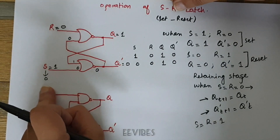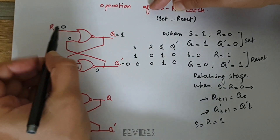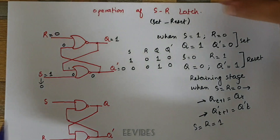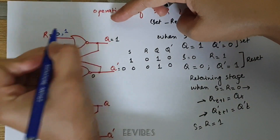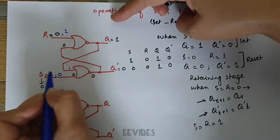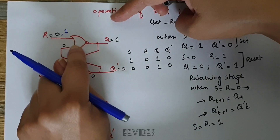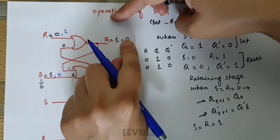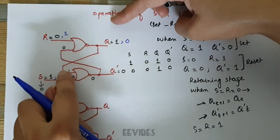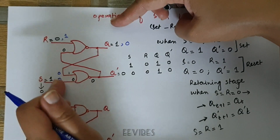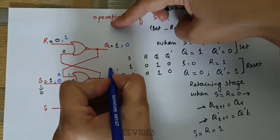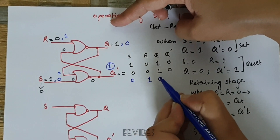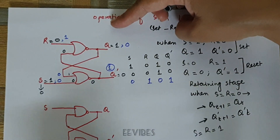Now we switch S equal to 0 and reset the latch by making R equal to 1. When R equal to 1 and S equal to 0, since any input of the NOR gate equal to 1 makes its output equal to 0, Q becomes equal to 0. This Q is fed into the lower NOR gate making both inputs equal to 0, and hence Q-bar produced will be equal to 1. So when S equal to 0 and R equal to 1, we get Q equal to 0 and Q-bar equal to 1.